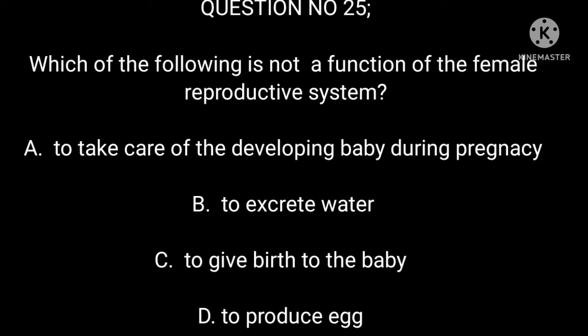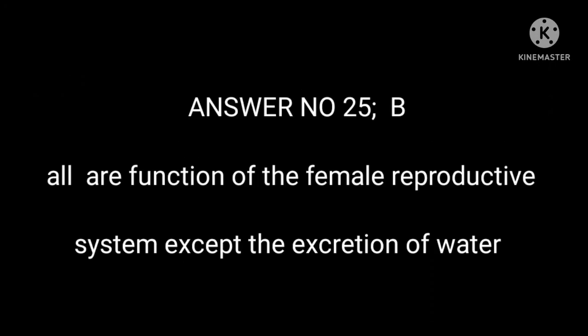Question number 25. Which of the following is not a function of the female reproductive system? A. To take care of the developing baby during pregnancy. B. To excrete water. C. To give birth to the baby. D. To produce eggs. Answer number 25: B. All are functions of the female reproductive system except the excretion of water.